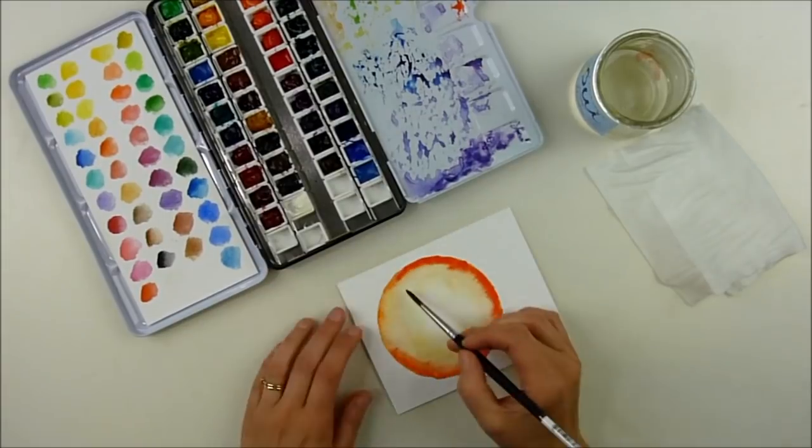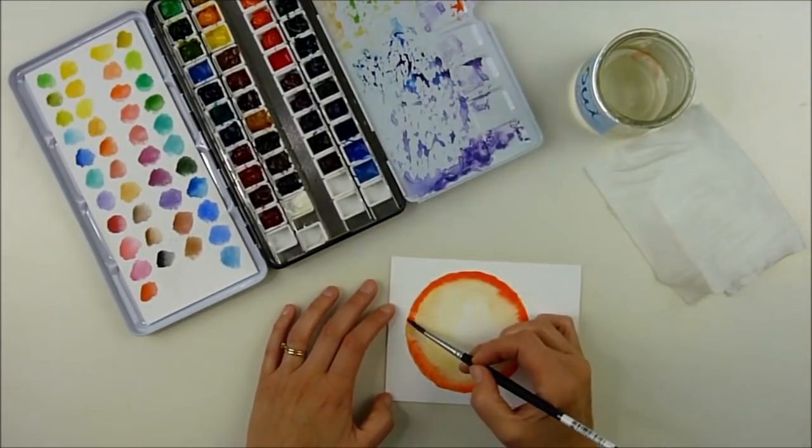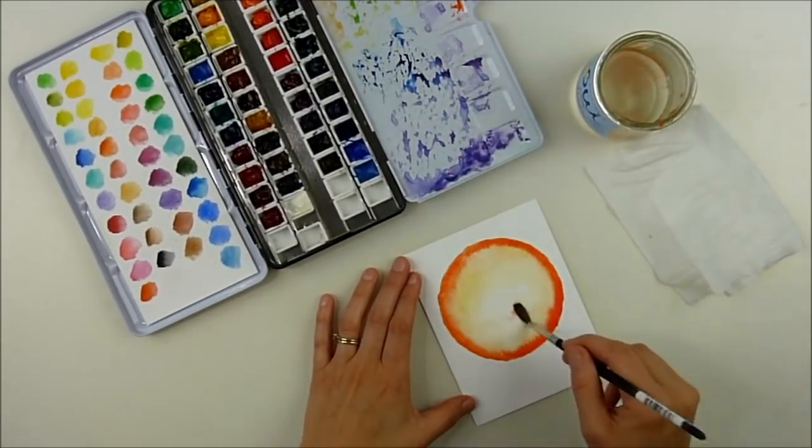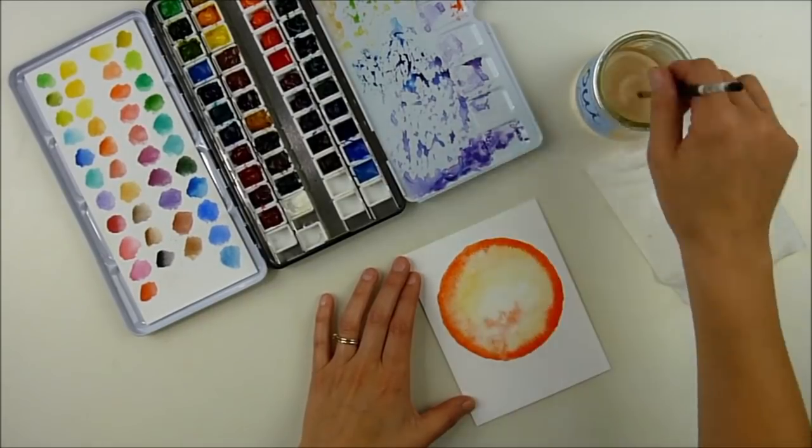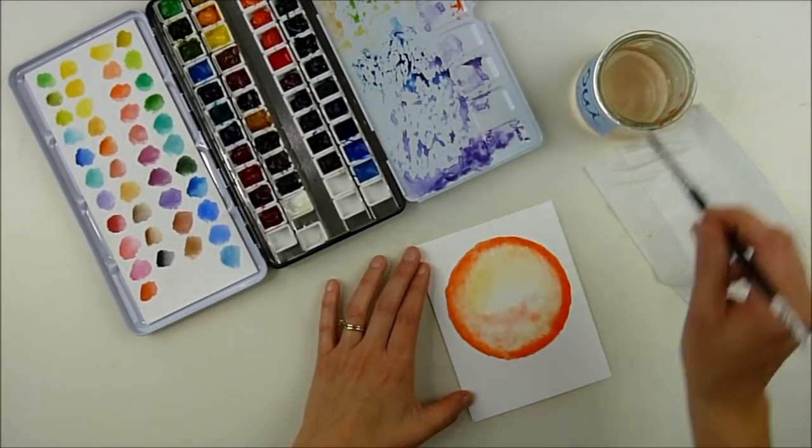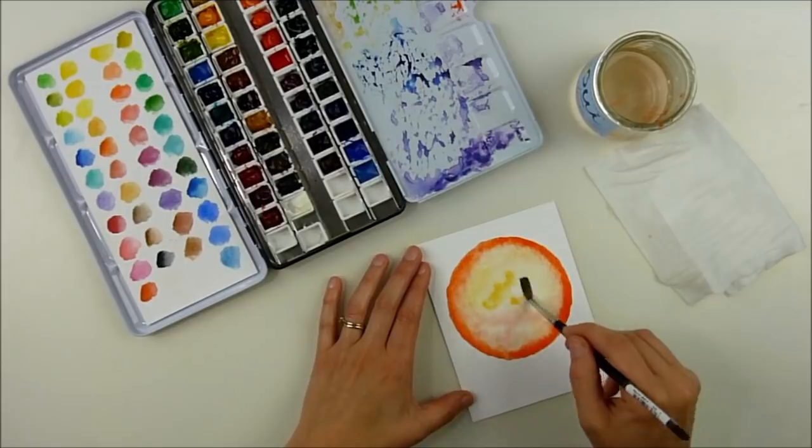Once I've gotten all the way around the edges, you just keep building up color until you're happy with the way it looks. I dripped a little bit in the middle there so I added some water to blend it out and soften it. At this point I wanted to go a little deeper with my color.